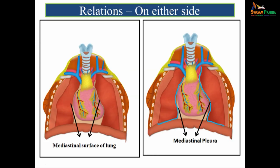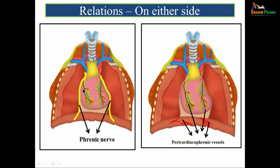On either side of the pericardium, we have the two lungs. The relations on either side include the mediastinal surface of the lung and the covering of the lung — that is the mediastinal pleura — related on either side. It is also related to the phrenic nerve, which goes to supply the diaphragm, and the pericardiacophrenic vessels.